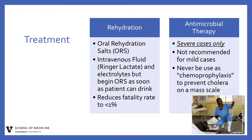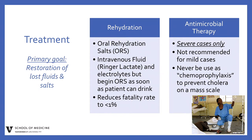Cholera patients should be evaluated and treated quickly. With proper treatment, even severely ill patients can be saved. The primary goal is the restoration of lost fluids and salts. Severely dehydrated patients are at risk of shock and require rapid administration of intravenous fluids. Mass administration of antibiotics is not recommended, as it has no proven effect on the spread of cholera and contributes to increasing antimicrobial resistance. Zinc is an important adjunctive therapy for children under five, helping reduce the duration of diarrhea and preventing future episodes. Breastfeeding should also be promoted for younger populations.